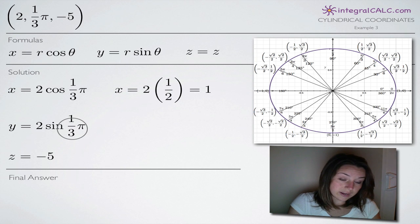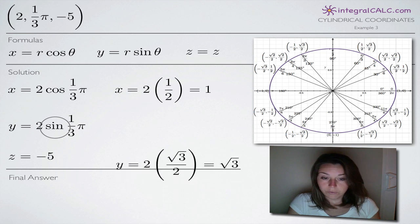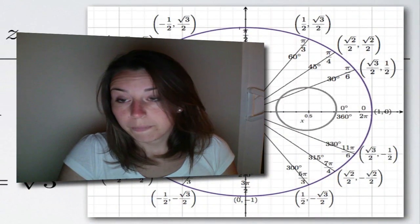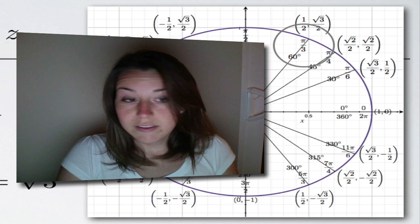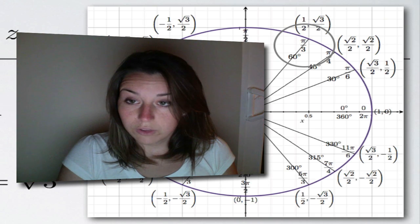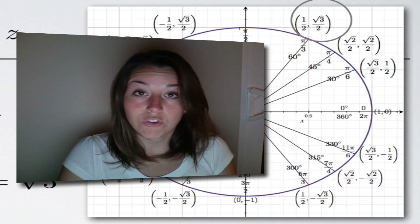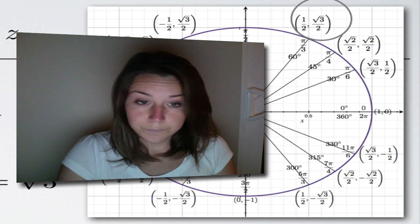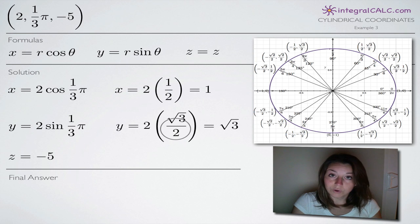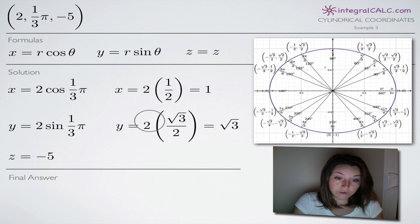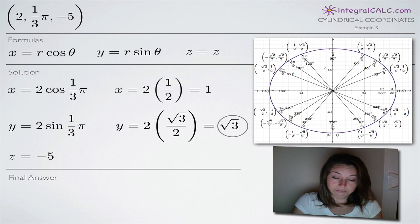To simplify the y coordinate, we again find pi over 3 on the unit circle and take sine of that angle. Sine on the unit circle is the y coordinate. The y coordinate at pi over 3 is the square root of 3 over 2. We plug in square root of 3 over 2 for sine of pi over 3, and when we multiply by the 2 out in front for r, the 2's cancel, leaving us with y equal to the square root of 3.